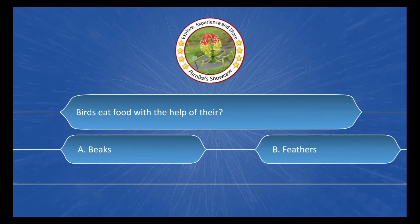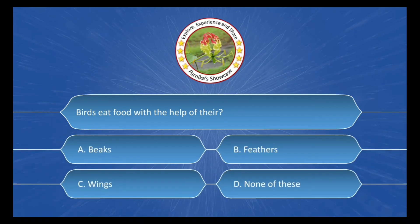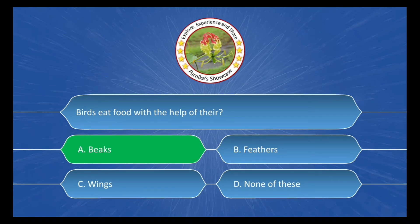Birds eat food with the help of their ___, and the options are: A. Beaks, B. Feathers, C. Wings, D. None of this. And the correct answer is option A. Beaks.